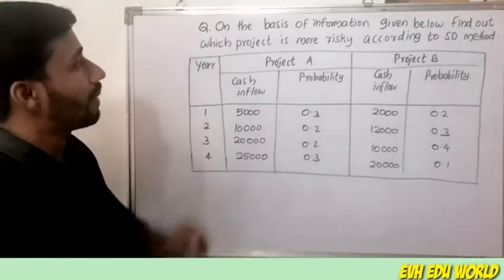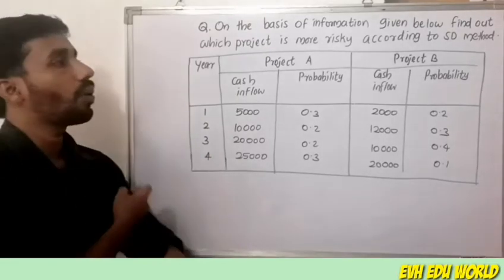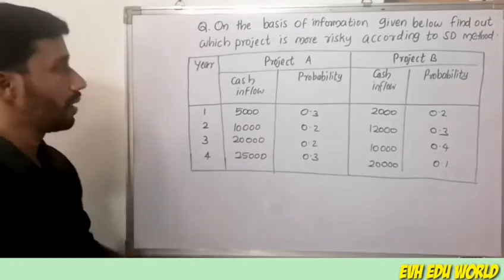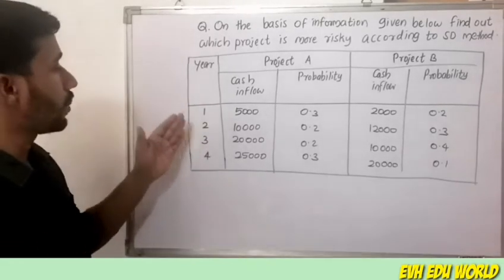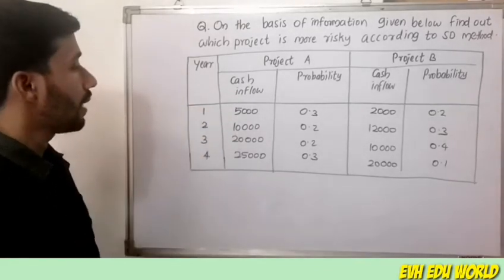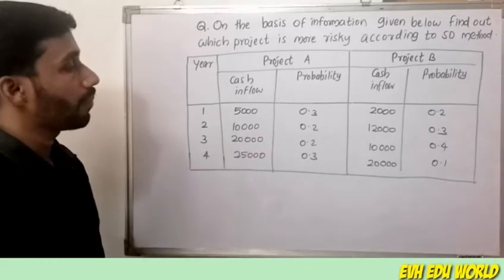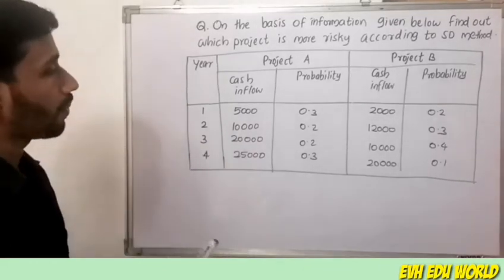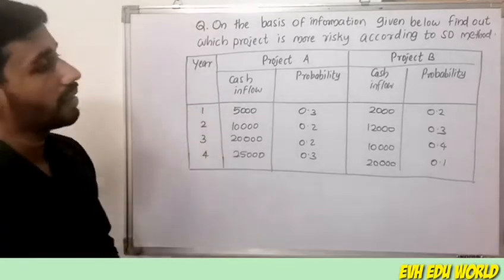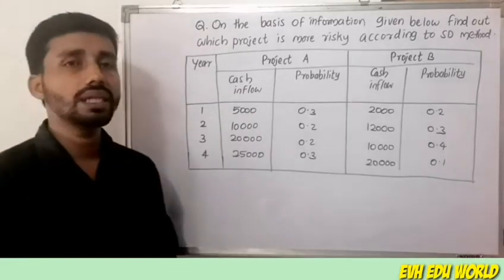On the basis of the information given, find out which project is more risky according to the SD method. For Project A: cash inflows are 5,000, 10,000, 20,000, 25,000 with probabilities 0.3, 0.2, 0.2, 0.3. For Project B: cash inflows are 2,000, 12,000, 10,000, 20,000 with probabilities 0.2, 0.3, 0.4, 0.1.